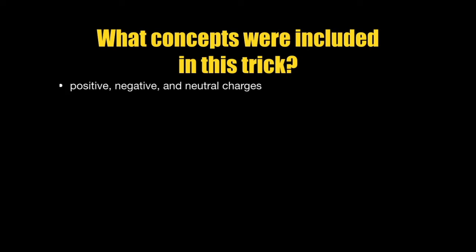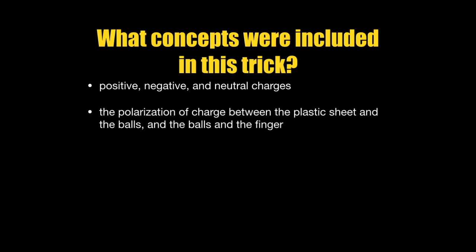What concepts were included in this trick? First, there were positive, negative, and neutral charges. Next, there was a polarization of charge between the plastic sheet and the balls, and also the balls and the finger.